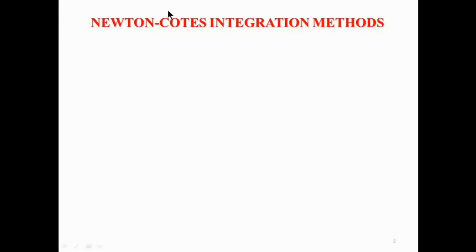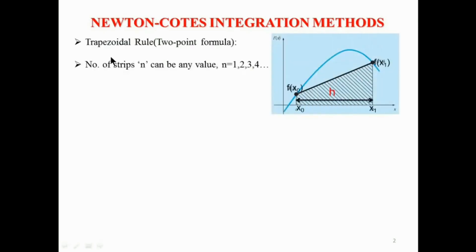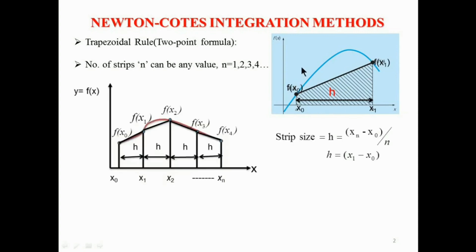First, I will revise the Newton-Cotes integration methods explained in the previous video. The first method is the trapezoidal rule, also called the two-point formula. In the trapezoidal rule, we replace the original curve with a straight line; a trapezoid forms, and its area represents the integration. We divide this area into n number of sub-intervals having constant strip size h, calculated by the formula h = (xn − x0) / n.